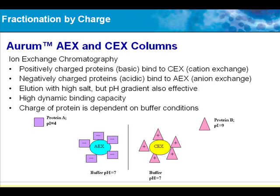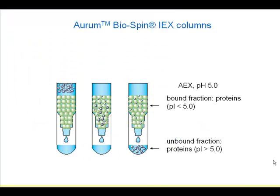Fractionation by charge — the ion exchange (IEX) column is commonly used in laboratories. Basically, you have the media with charges on the group. If you define your buffer pH to make proteins negatively or positively charged, negatively charged proteins will bind to your column while positively charged proteins will elute from the ion exchange column. You then collect the bound fraction using a high salt wash.